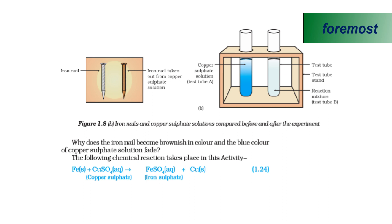This is due to the displacement reaction between iron and copper sulfate. Iron metal is replacing the position of copper in copper sulfate, which changes the color of the solution.